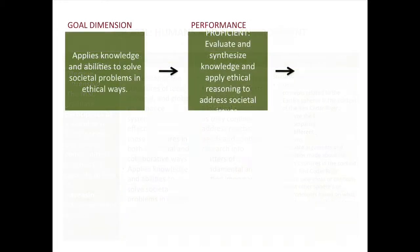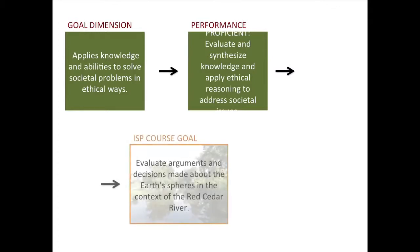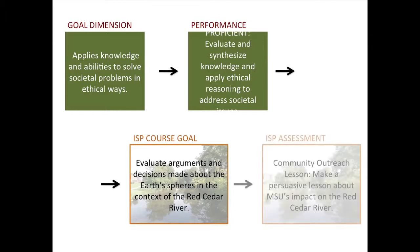So aligning our dimension of effective citizenship in a science course: a sub-goal would be to evaluate and analyze knowledge that allows for ethical reasoning about societal issues. The corresponding course goal is that students can evaluate arguments and decisions made about the earth's systems relative to the river on campus. We assess this at the end of the semester when students set up tables and give presentations to the MSU community about the Red Cedar River and its impacts.